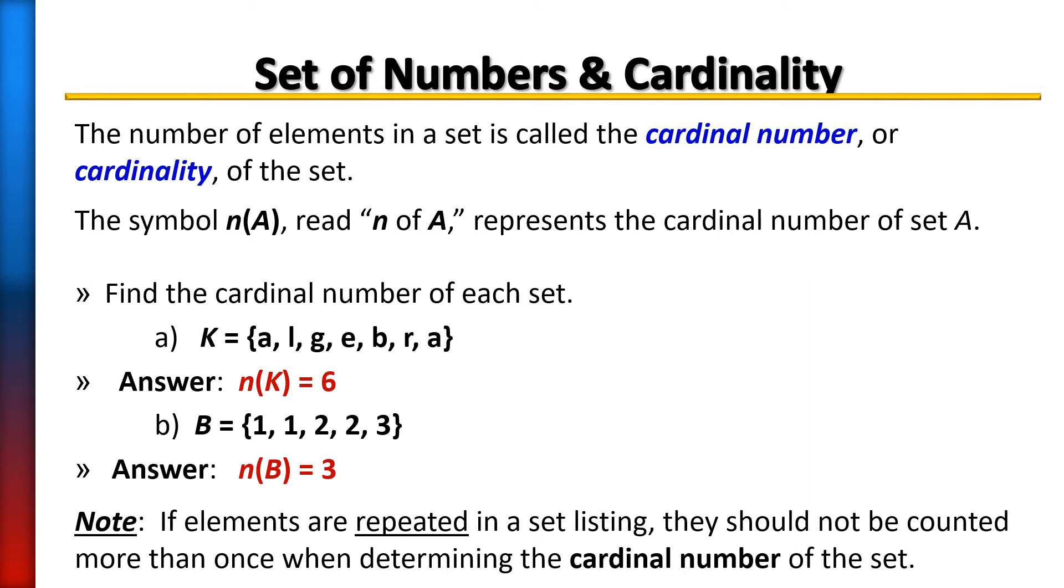So again, remember if elements are repeated in a set listing, you do not count them twice. You don't count them more than once when determining the cardinal number of the set.